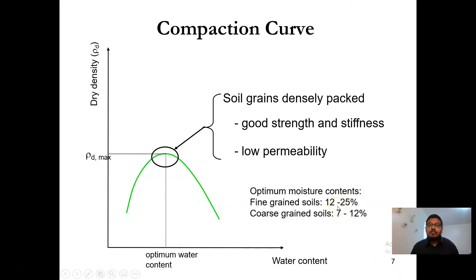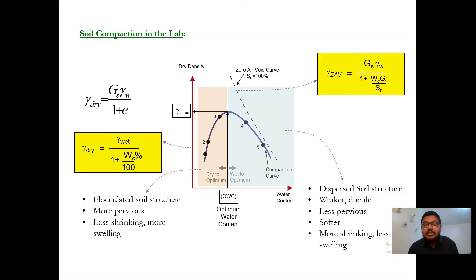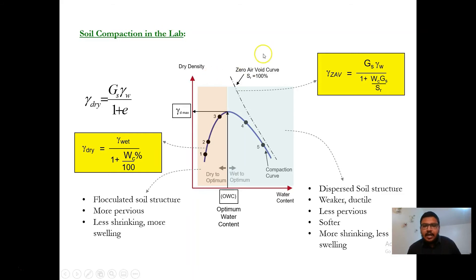The optimum moisture content differs based on the type of soil. For fine-grained soils it typically ranges from 12 to 25%. From the curve we obtain the maximum dry density and the optimum moisture content. We also plot the zero air void curve using the appropriate formula — the zero air void curve represents a degree of saturation of 100%, meaning all air voids are completely filled with water and there is no air void remaining.